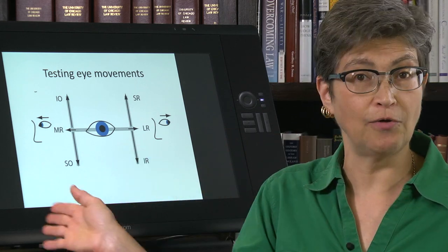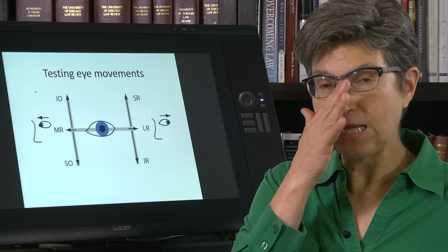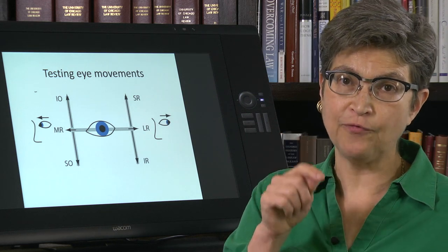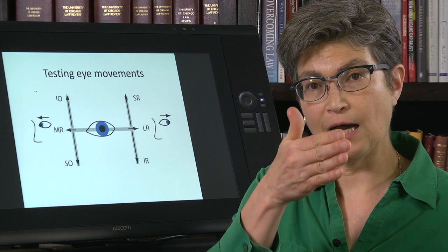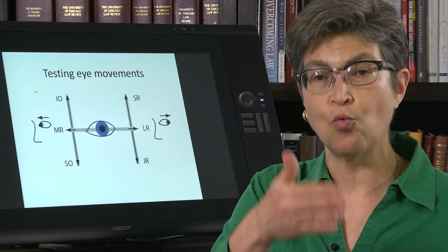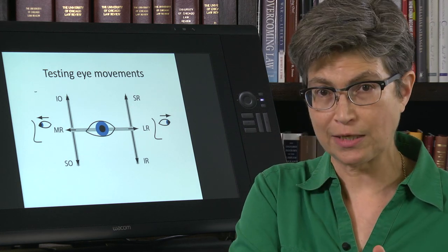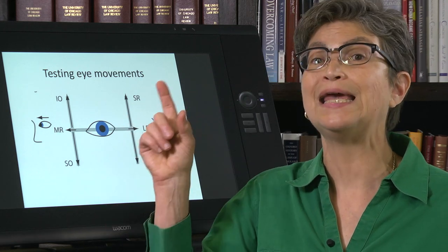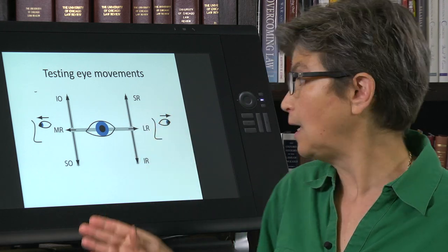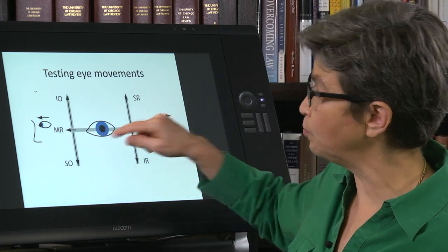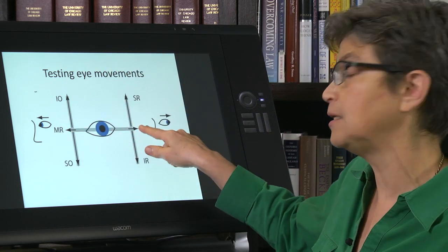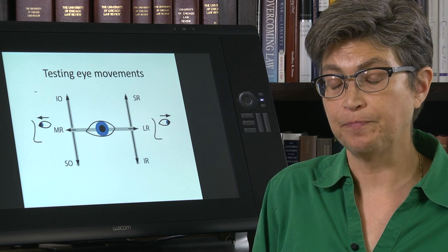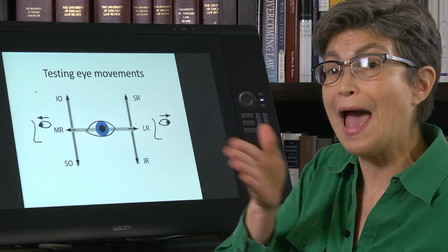Lateral rectus, medial rectus, that's all you got all day long. To test for the superior and inferior rectus and oblique muscles, you've got to get the eye to a certain starting position where the action of either the rectus muscles or the oblique muscles is isolated. And to isolate the oblique muscle actions, you adduct the eye. And to isolate the rectus muscle actions, you abduct the eye.